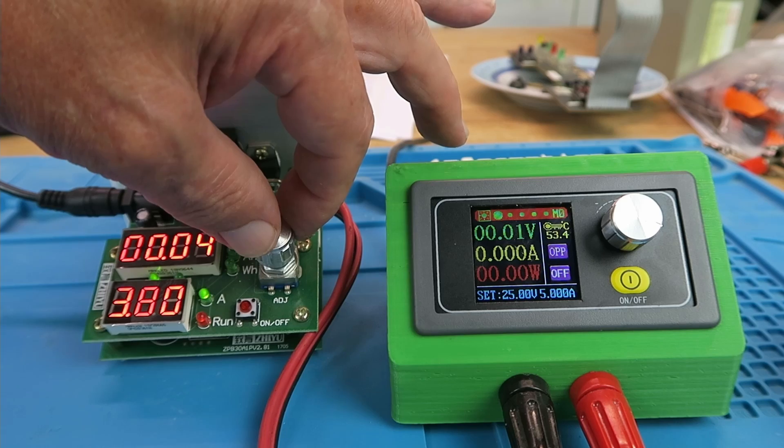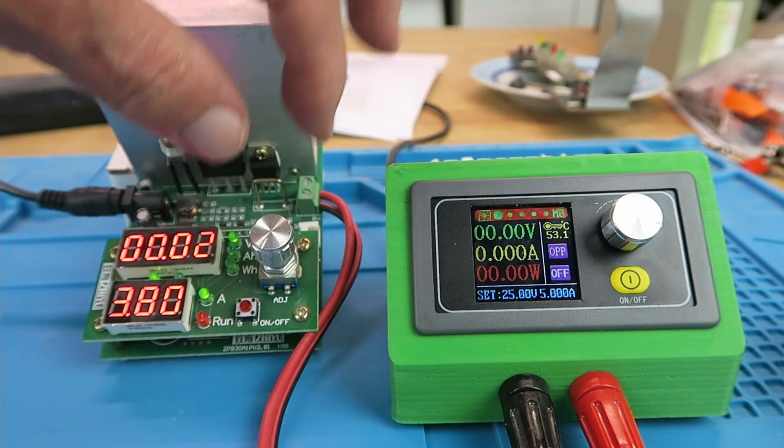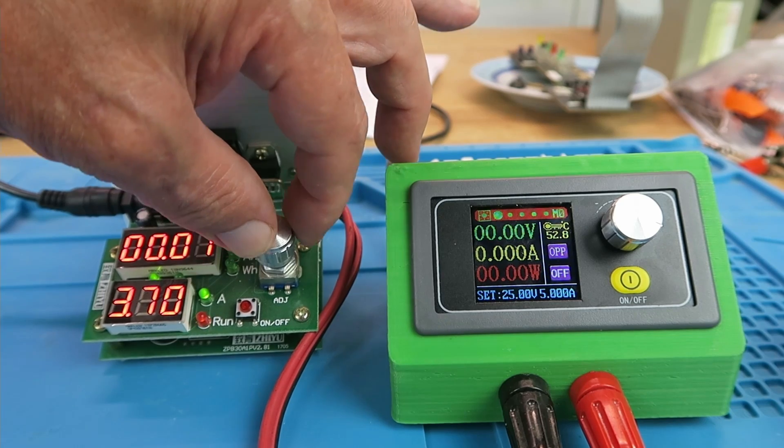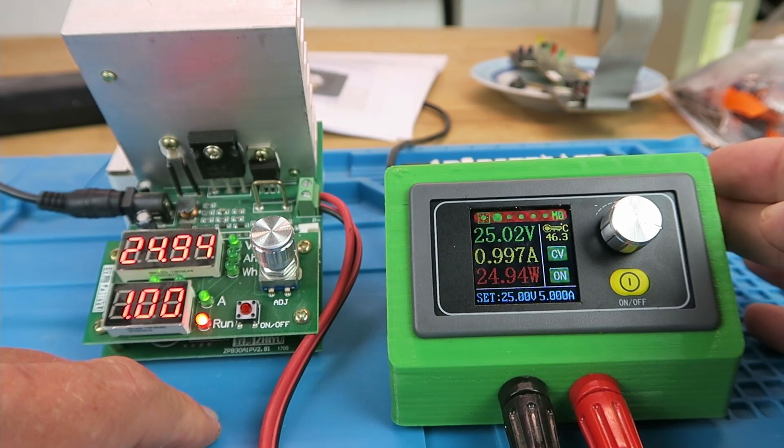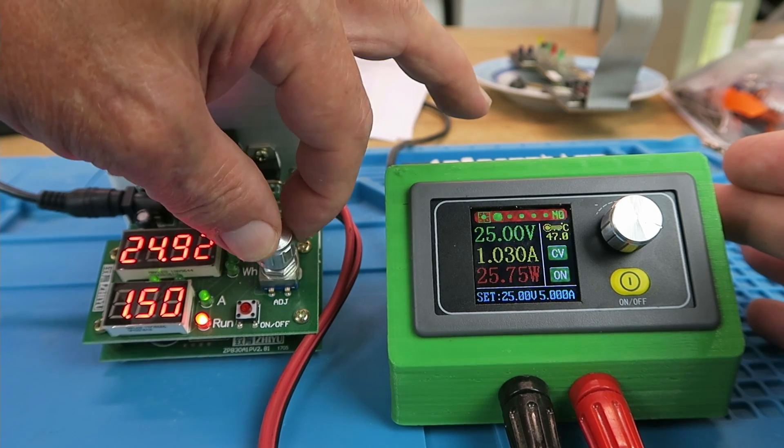You can see there that the output voltage has cut off and we have OPP, so it's over power. Set the load back to 1 amp and there it is happy again at 25 volts 1 amp. Crank it up again.